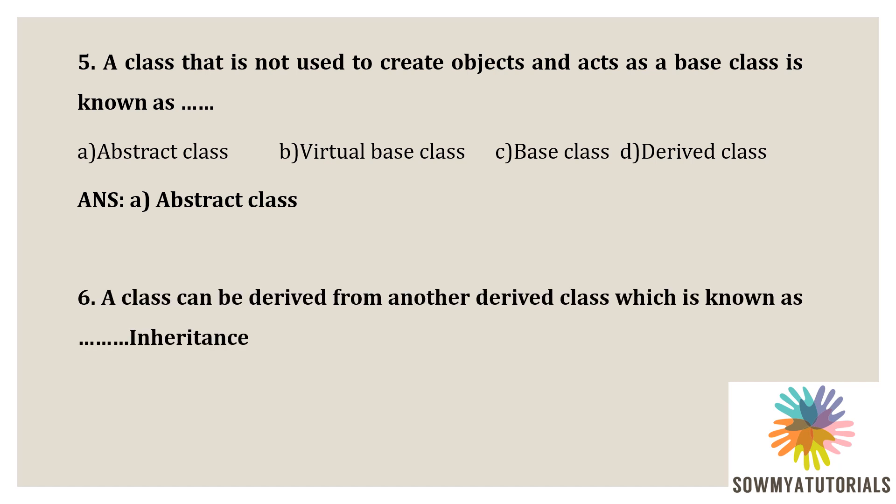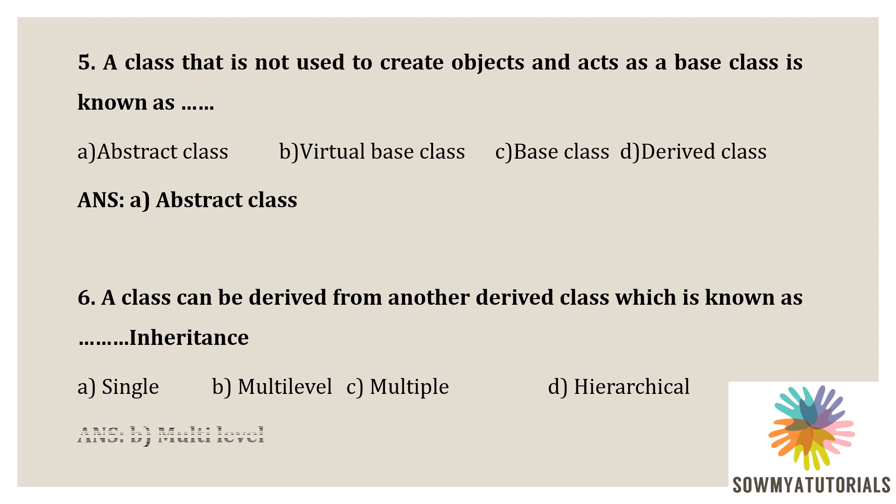Next question: a class can be derived from another derived class — which is known as what type of inheritance? Options are option A: single, option B: multi-level, option C: multiple, option D: hierarchical. The correct answer is multi-level inheritance. Multi-level inheritance is where a class can be derived from a class that is already derived. It has three classes: the first class is the base class, the second is the intermediate class, and the third is the derived class.